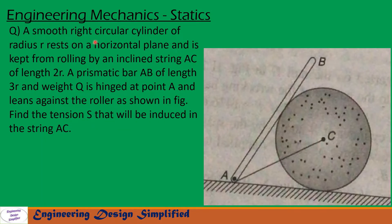Today's problem: a smooth right circular cylinder of radius R rests on a horizontal plane and is kept from rolling by an inclined string AC of length 2R. A prismatic bar AB of length 3R and weight Q is hinged at point A and leans against the roller as shown in the figure. Find the tension S that will be induced in the string AC.